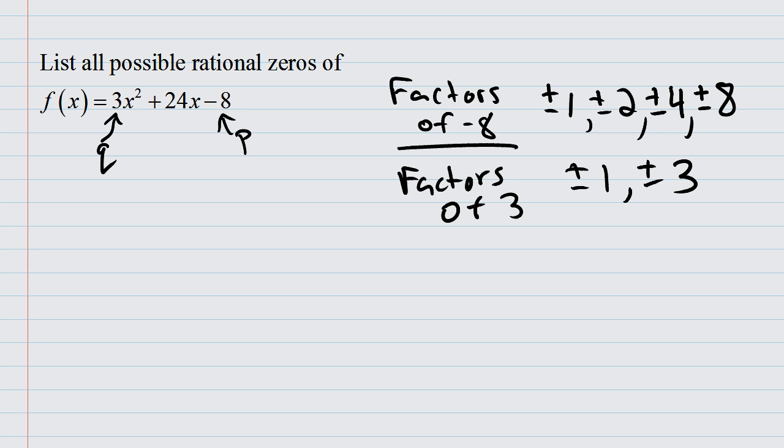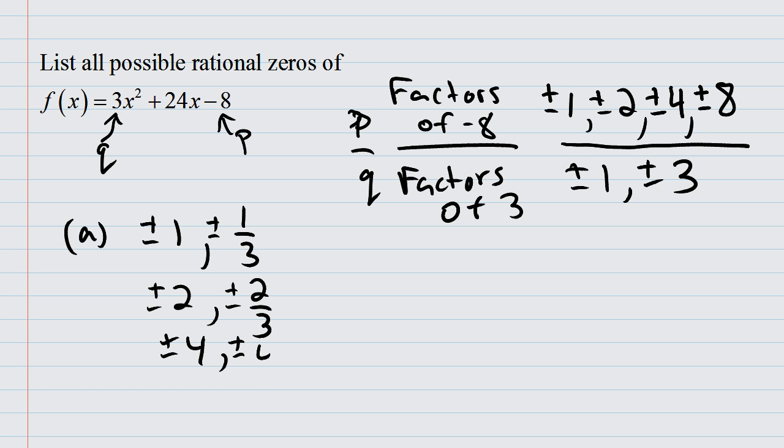What you do is figure out all possible combinations of these where the factors of p are in the numerator and the factors of q are in the denominator. We make fractions of these guys with all possible signs. We could have plus or minus 1 over 1, plus or minus 1 over 3, plus or minus 2 over 1, plus or minus 2 over 3.